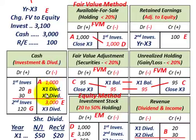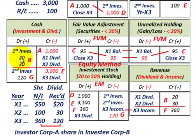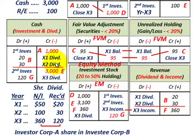For the dividends in year X1 and year X2 under the fair value method: the $20,000 in year X1 and $30,000 in year X2 are recorded by debiting cash for those amounts, and then crediting dividend revenue on the income statement — $20,000 for year X1 and $30,000 for year X2.